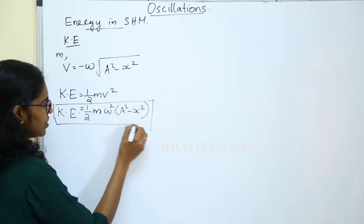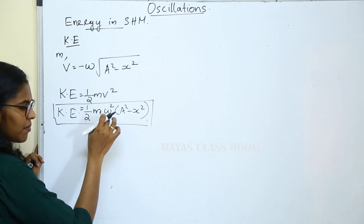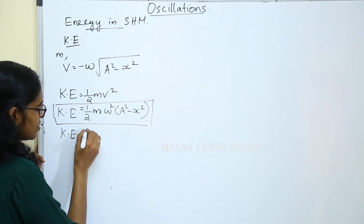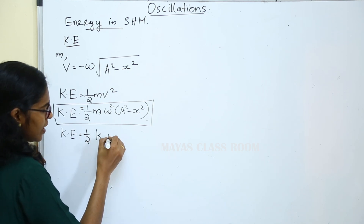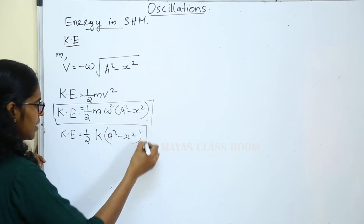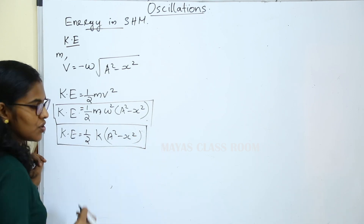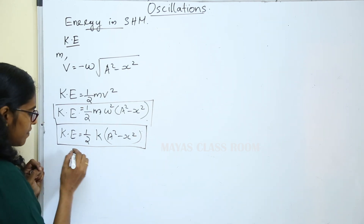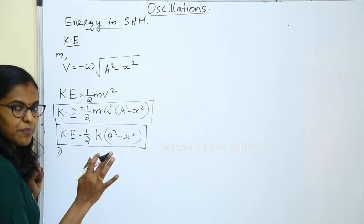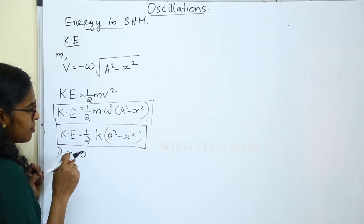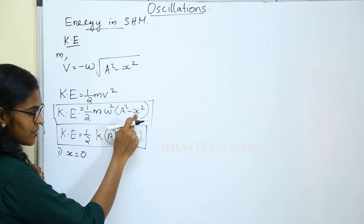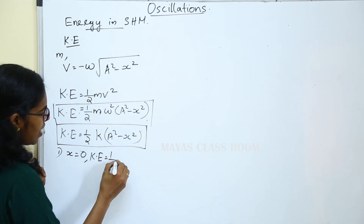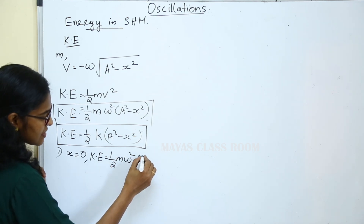The kinetic energy equation is: half m omega squared into (a squared minus x squared). If we substitute m omega squared equal to k, then kinetic energy is equal to half k into (a squared minus x squared). That is the expression for kinetic energy of simple harmonic motion. We have two cases. In the mean position, x is equal to 0. If we substitute x equal to 0, then the kinetic energy is equal to half m omega squared into a squared.